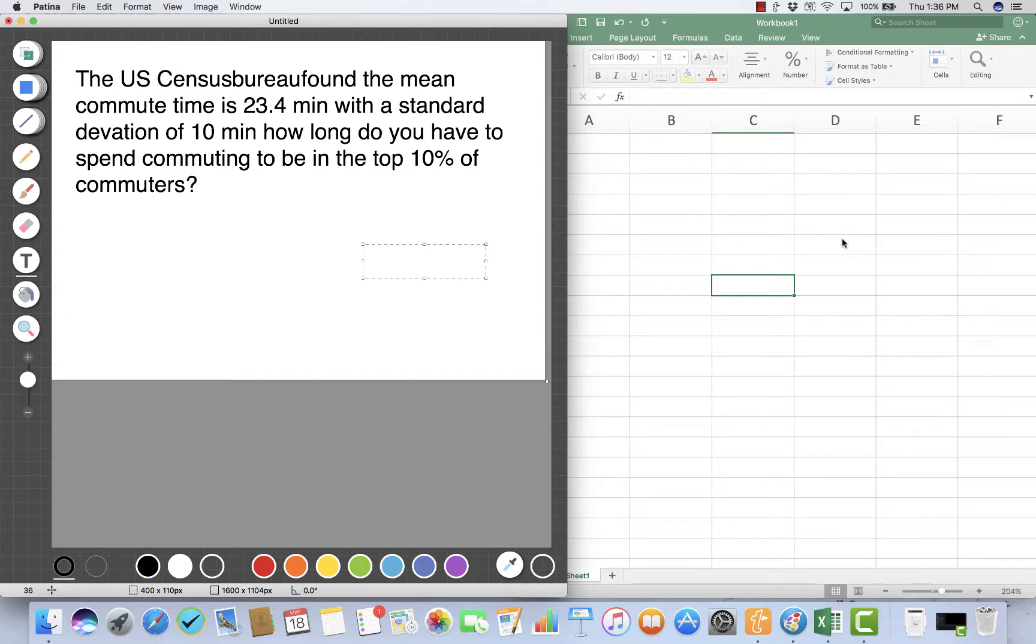What if we want to go the other way, where we have a probability or percentage and want to go backwards to a raw score? For example, the U.S. Census Bureau found the mean commute time is 23.4 minutes with a standard deviation of 10 minutes. How long do you have to spend commuting to be in the top 10% of commuters?